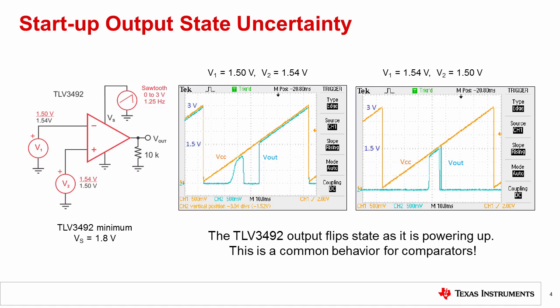Thus, the output may intermittently provide a false or incorrect state during startup until the supply voltage reaches the comparator's minimum specified operating voltage and the device stabilizes. This can be an issue if a circuit following the comparator comes to life quicker during startup and acts upon an unintended output state coming from the comparator.